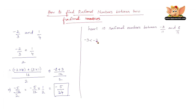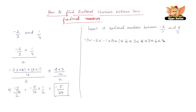There is minus 2 which is greater than minus 3. There is minus 1 which is greater than minus 2. There is 0 which is greater than minus 1. There is 1 which is greater than 0. There is 2 which is greater than 1. There is 3 which is greater than 2, and so on till we can write this till 8.